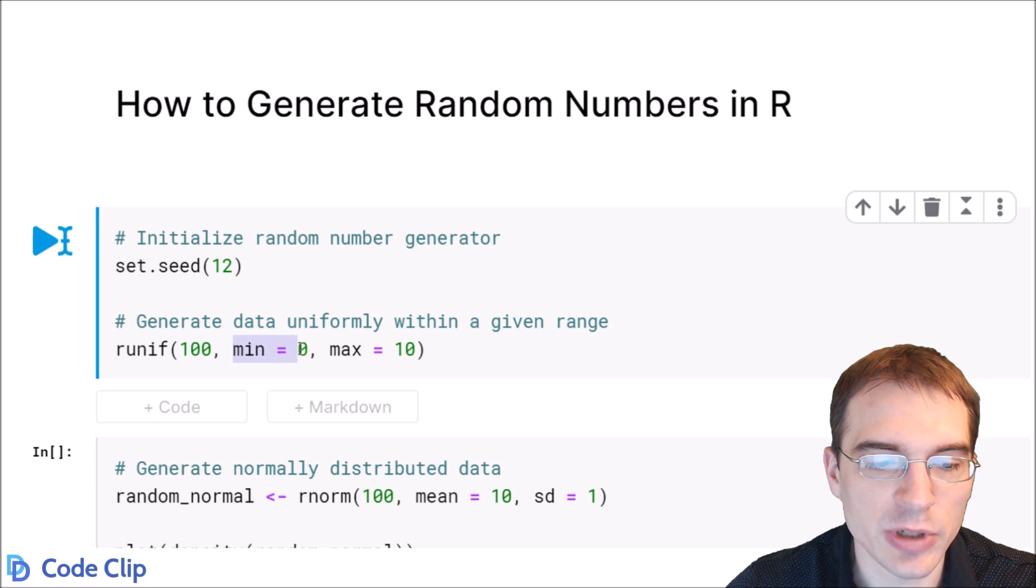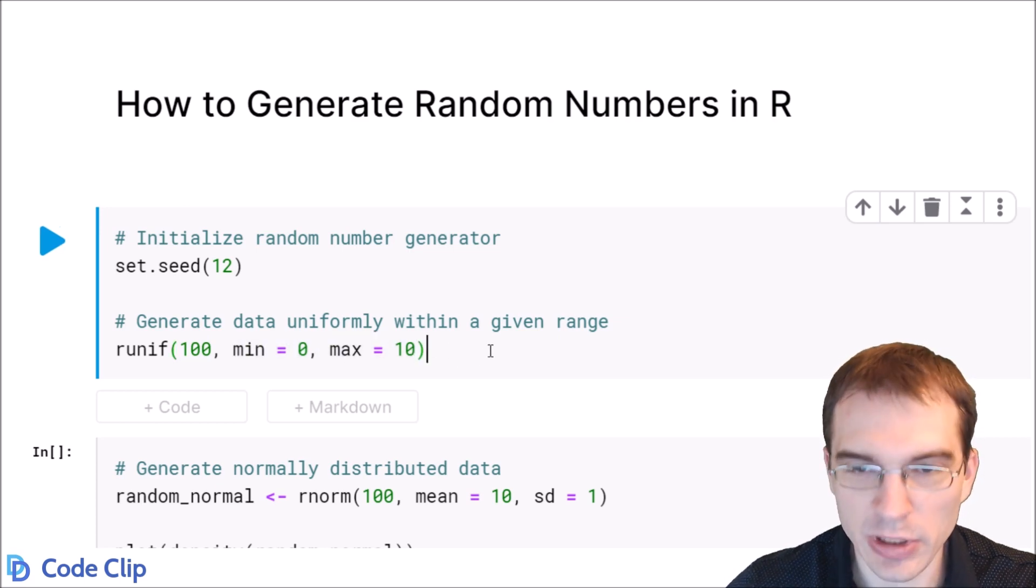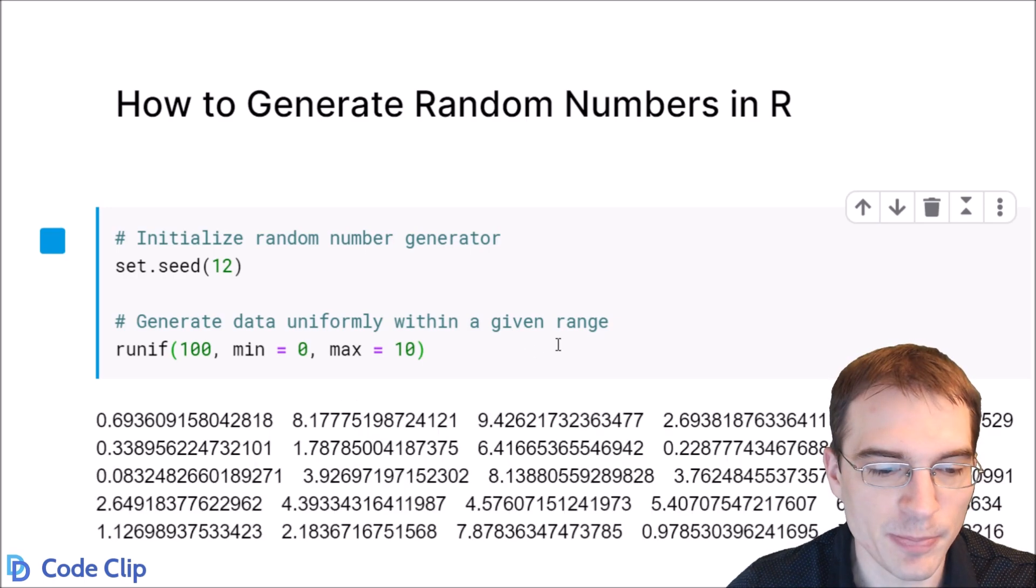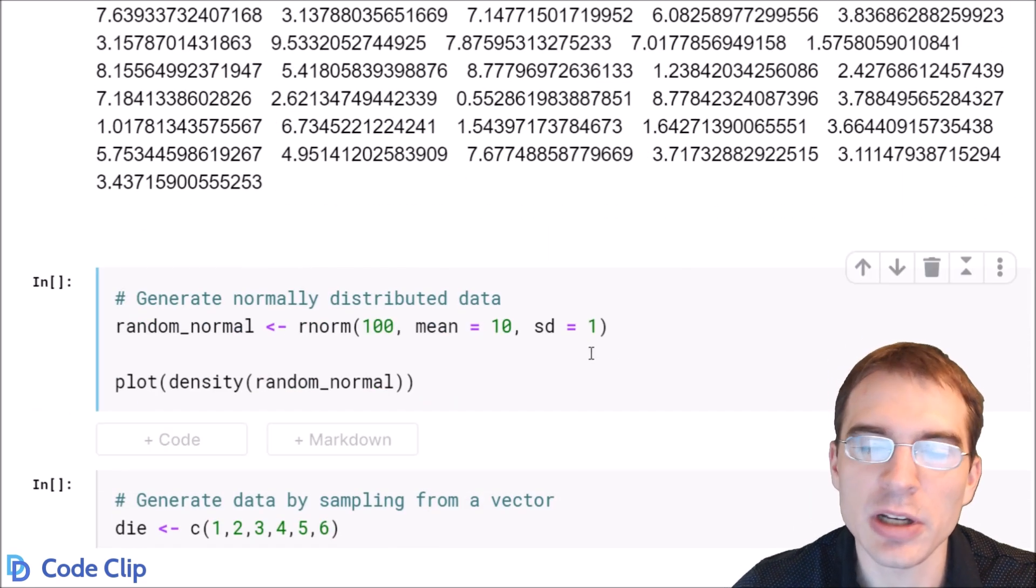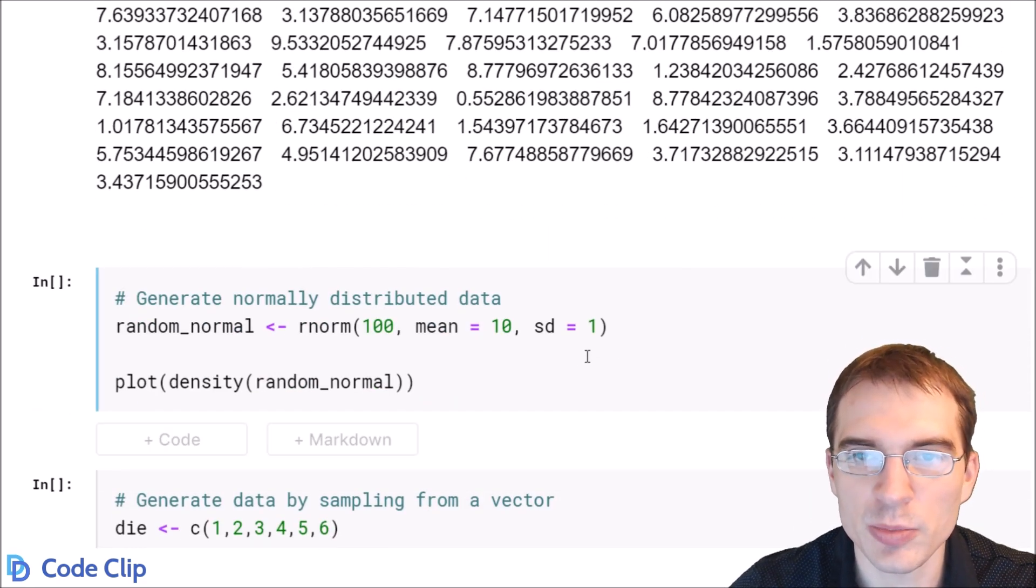And we're just generating on the range 0 to 10. We'll get 100 random numbers somewhere in that range. They're going to be floating point numbers so they'll have decimals to them. And here are the results. Now you don't have to generate numbers only from uniform distributions.